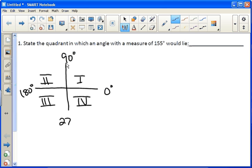180's on the left, 270's in the bottom, 360's back all the way around. Now 155 falls between 90 and 180, meaning it would be somewhere in this region. So it would be Roman numeral 2 or the second quadrant.